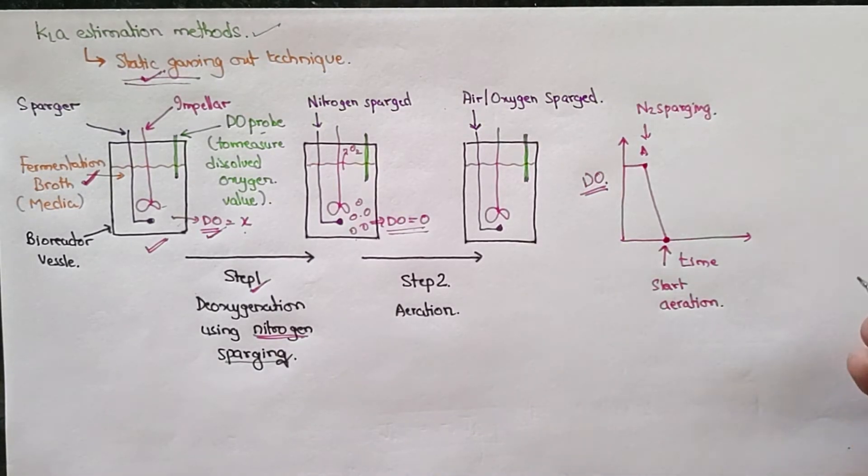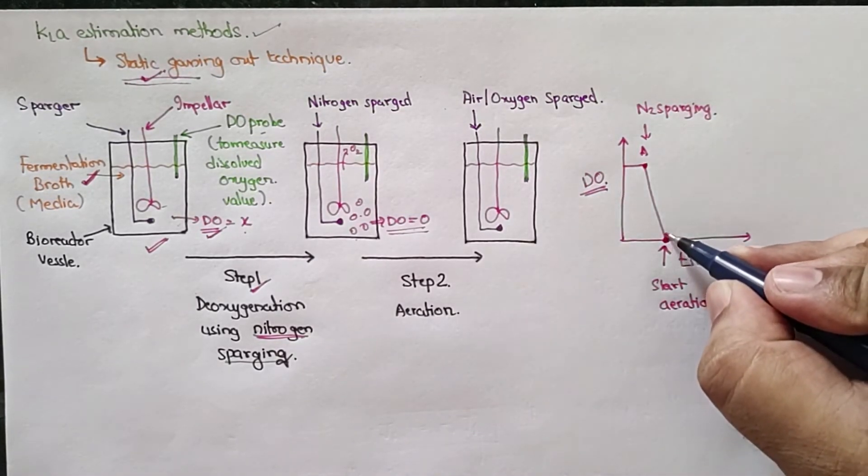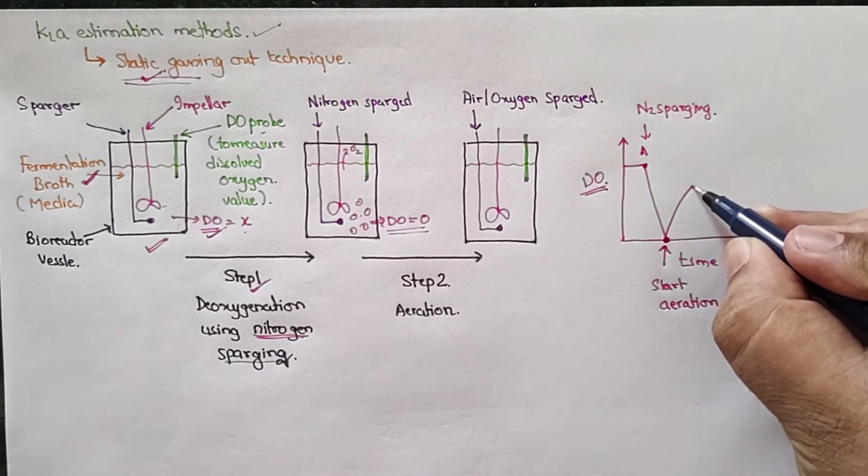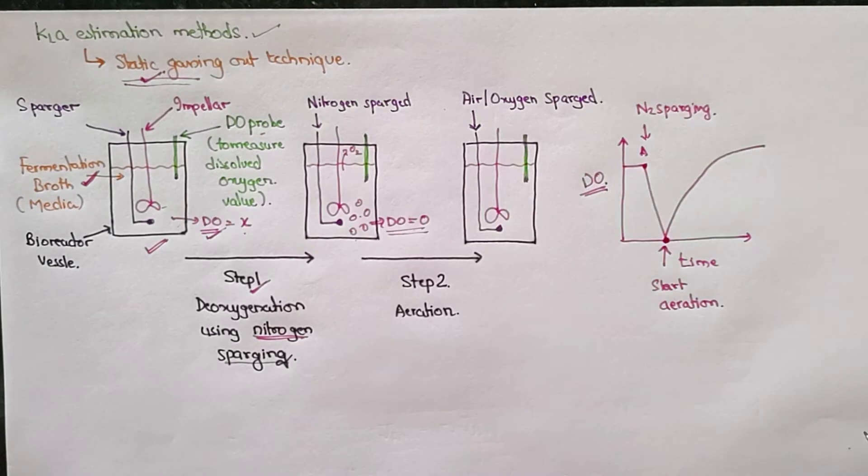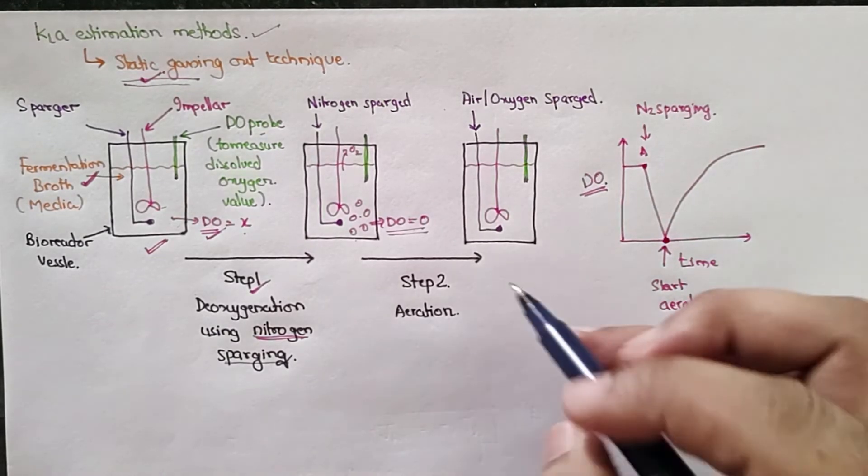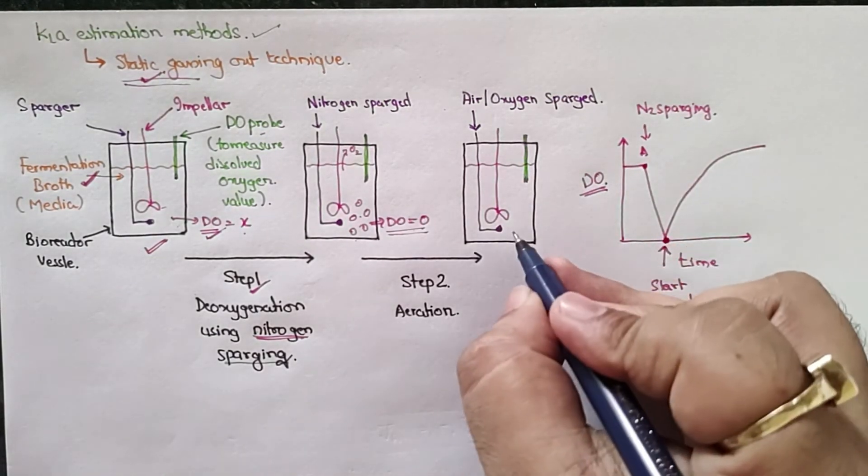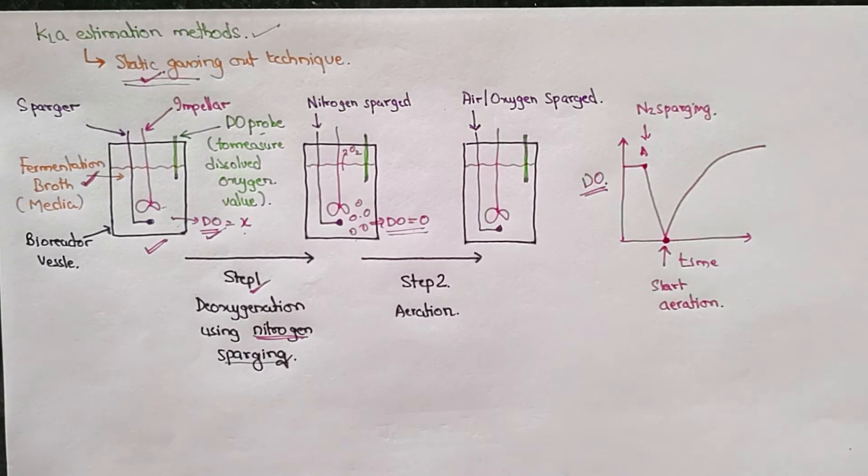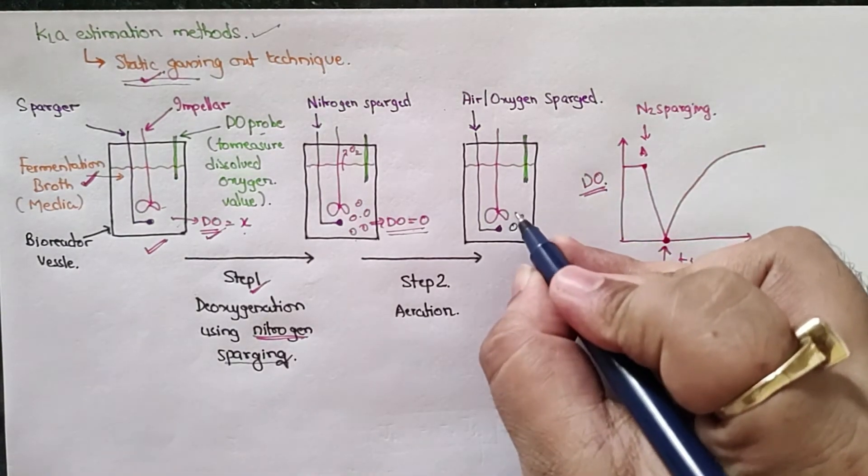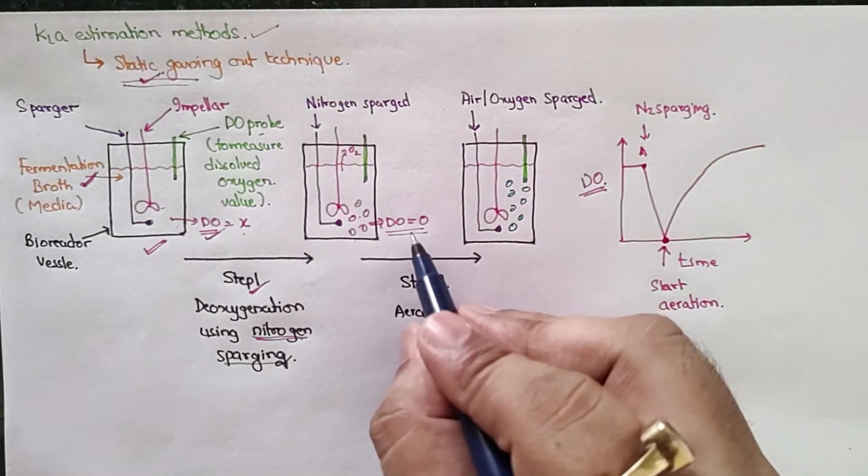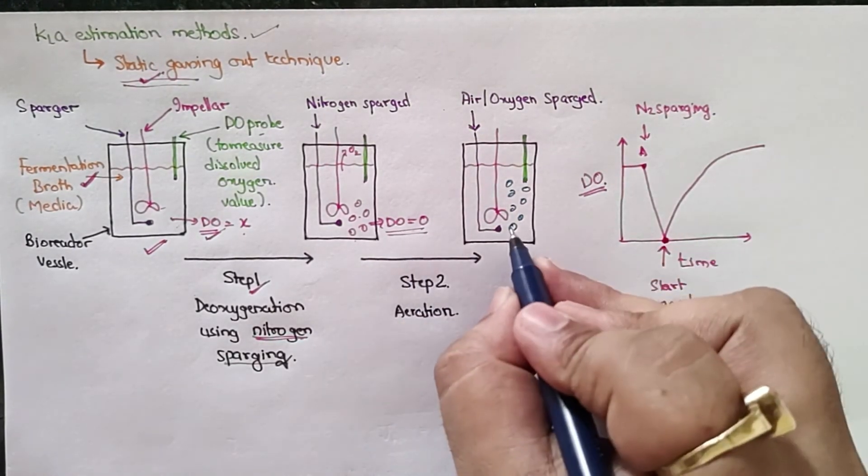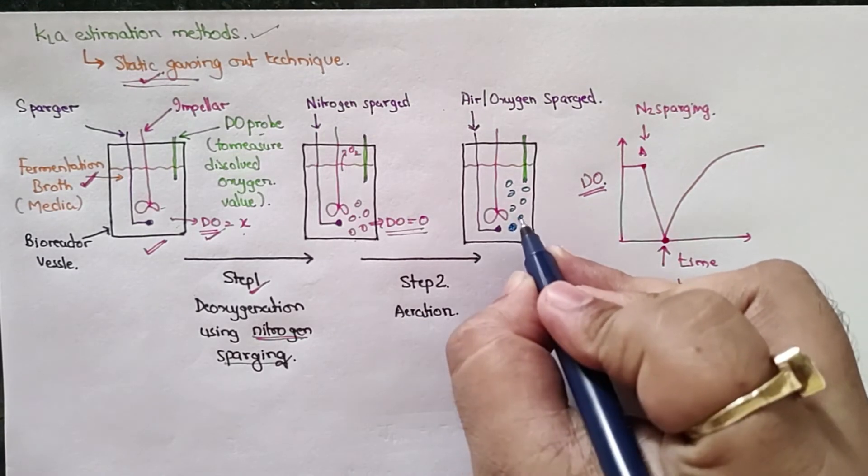Once you start aeration, slowly there will be an increase in oxygen concentration in the fermentation broth. So here in the second step, this time you are sparging oxygen into the system. You are sparging oxygen or air because the initial DO concentration was very less, and inside this bubble the oxygen concentration is high.